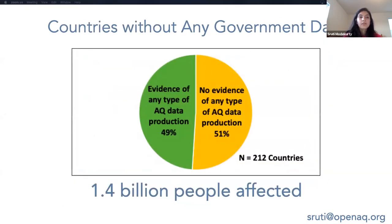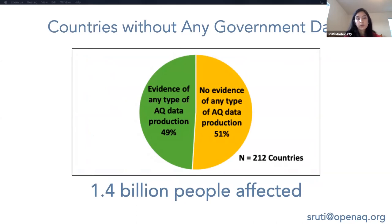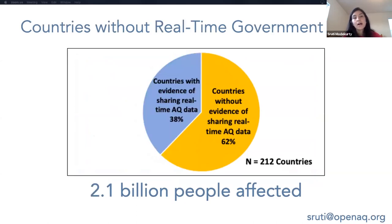Out of the 212 countries we looked at, about 51% didn't have any air quality data, representing a total population of 1.4 billion people. And if we look at which countries are sharing real-time government data, that number drops to a third — the two-thirds that don't have real-time government data represent a population of 2.1 billion people.